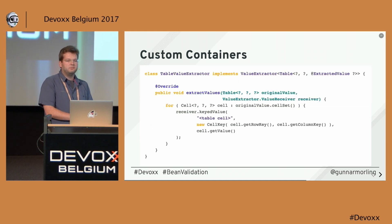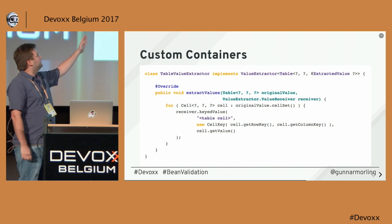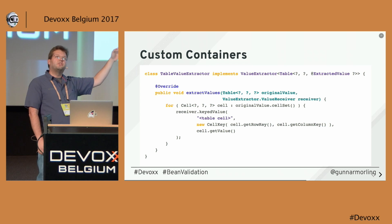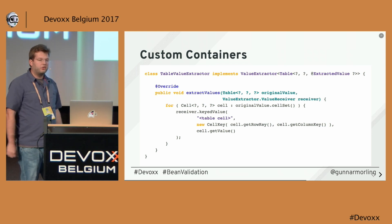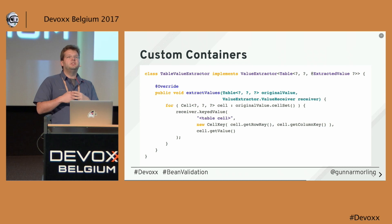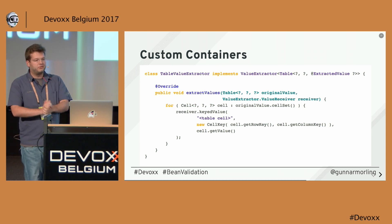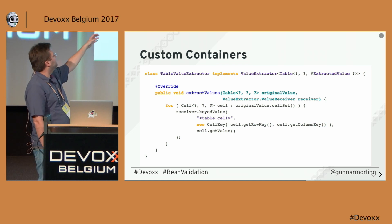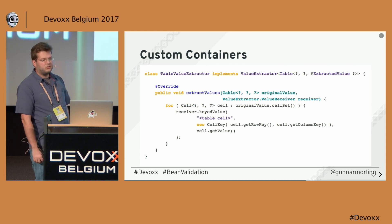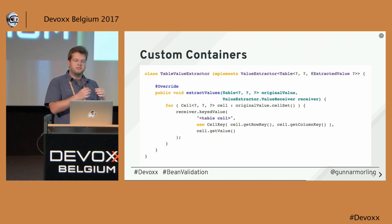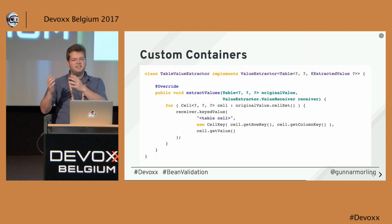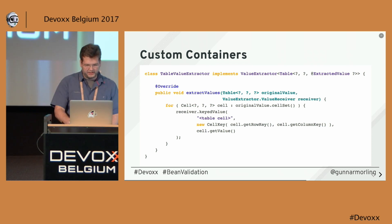To give an example of how a value extractor looks: you implement the ValueExtractor interface, which has a single method that receives the container to extract values from and a callback to emit those values. Here we iterate over all the cells in the table and call the keyed value method to ensure that any constraint violation includes a reference to the key of that table cell.